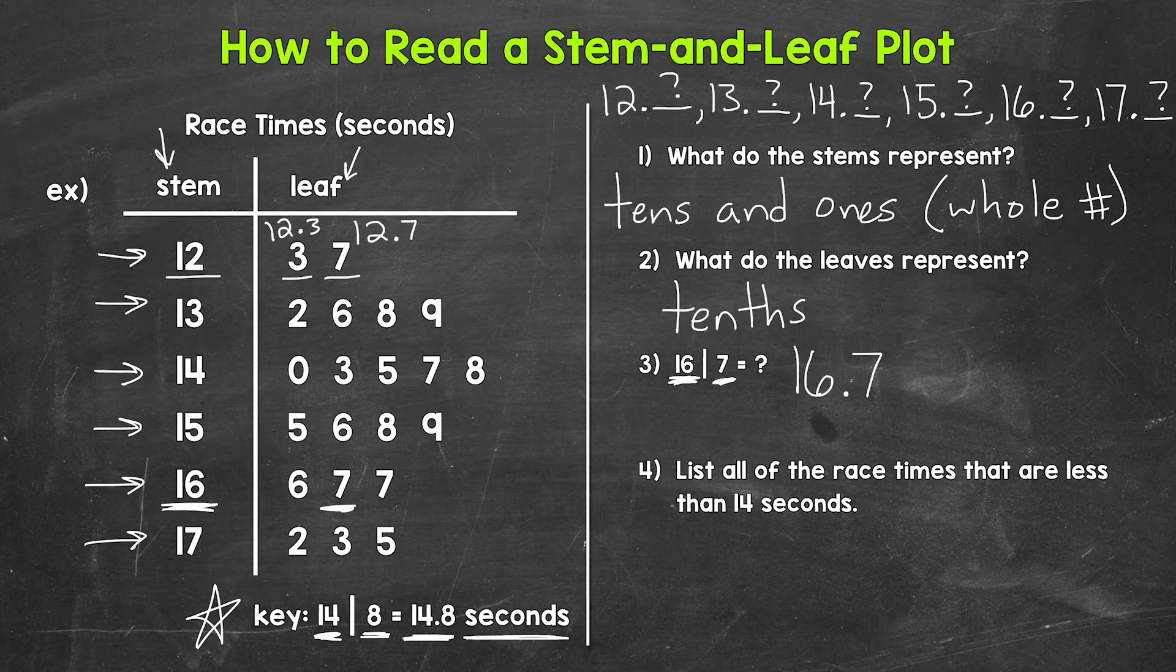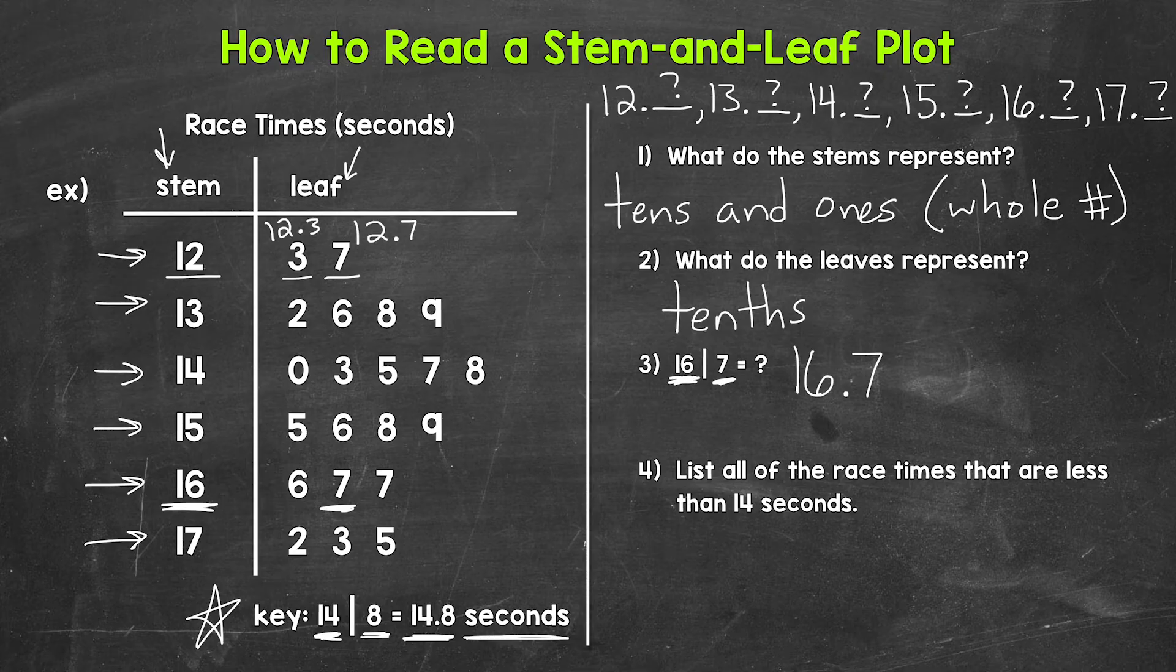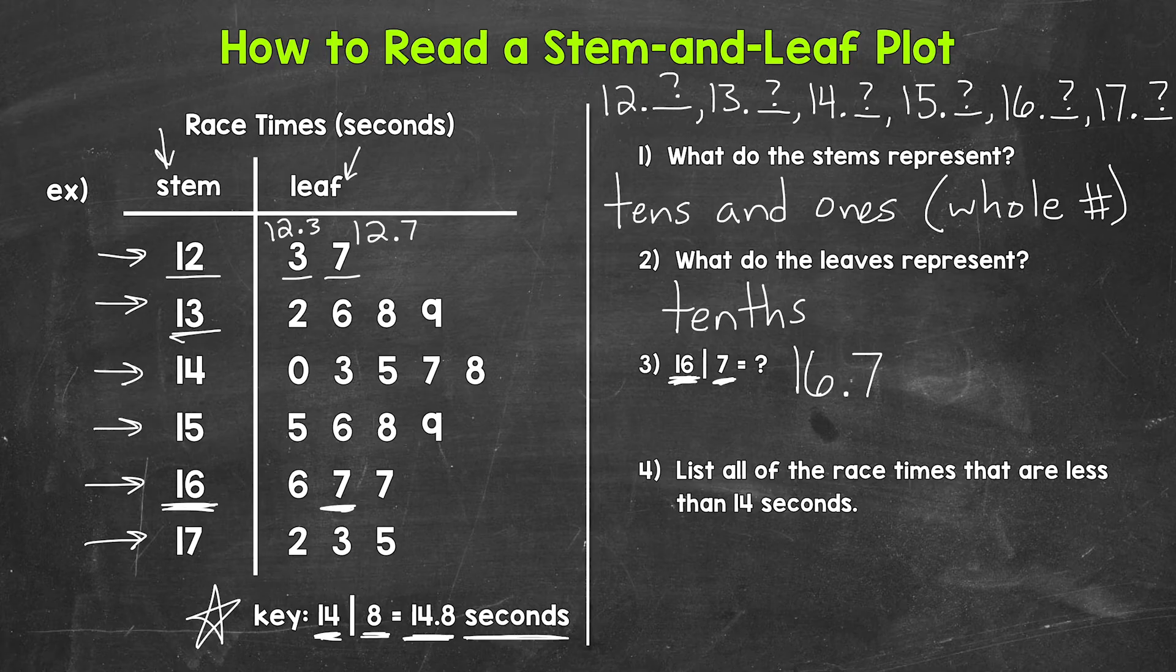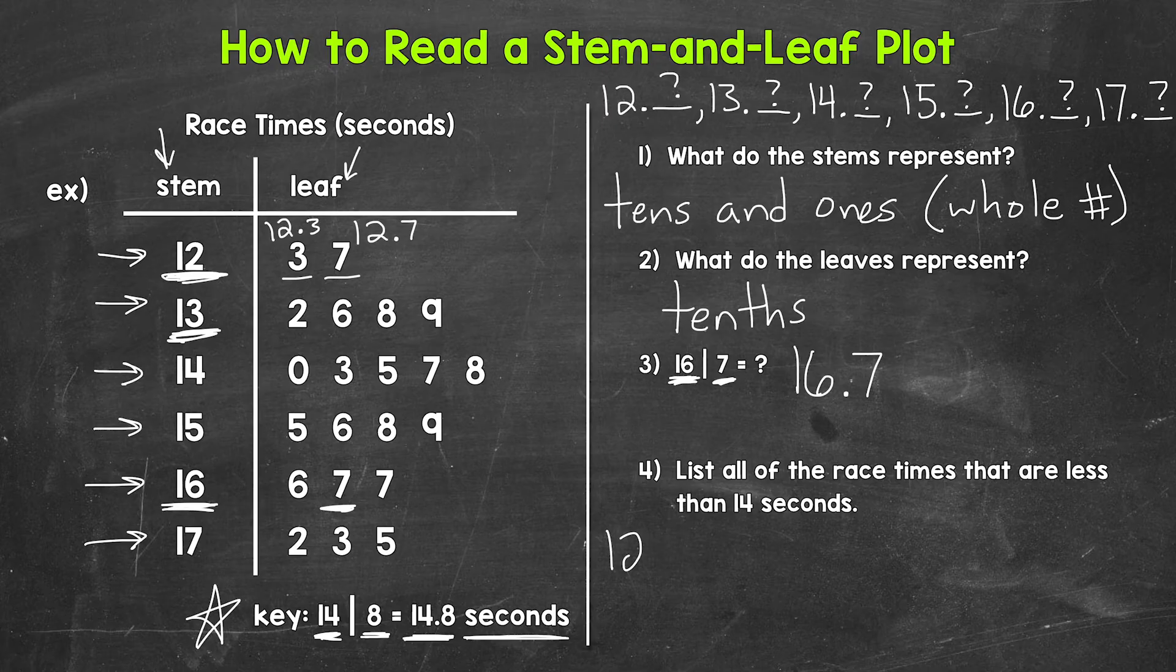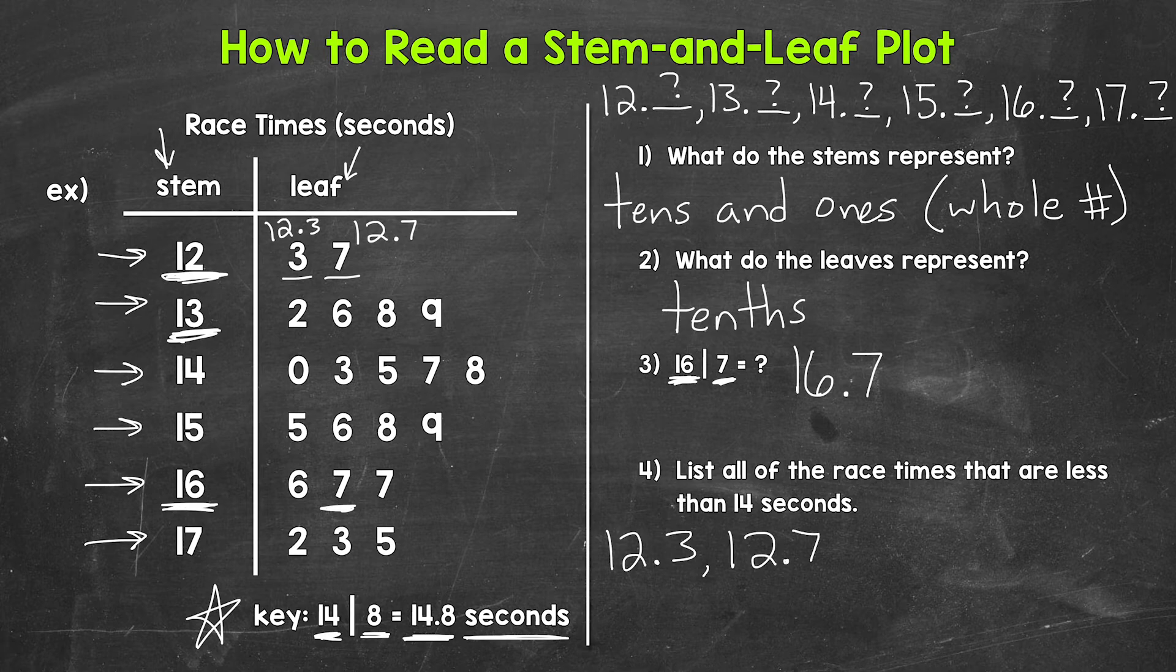And then for number 4, we have list all of the race times that are less than 14 seconds. So we need to look at 13 seconds and 12 seconds. Let's start with the stem of 12, which we already wrote out those race times. We have 12 and 3 tenths, and then 12 and 7 tenths.